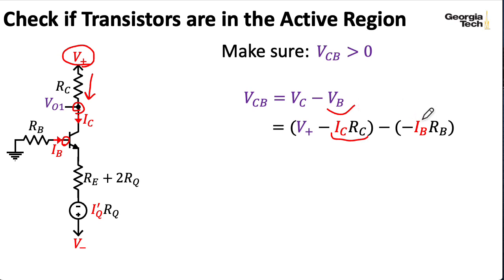And our base voltage is going to be whatever our voltage is out here, which is just zero, minus whatever voltage we lose going across the resistance RB, which is just going to be IB times RB by Ohm's law.